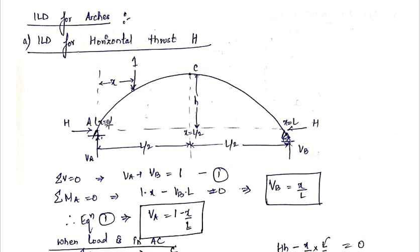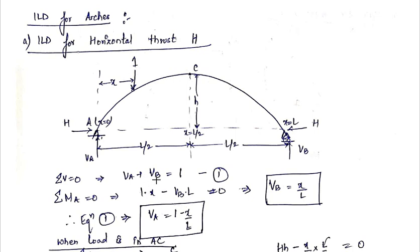We have taken the distance x from support A. Therefore, the value of x will be 0 at support A, L/2 at point C, and capital L at support B. Now, in order to draw the ILD for the horizontal thrust, first we will find out the values of the vertical reactions at A and B by applying all the equilibrium equations. Summation of all vertical forces equal to 0 gives VA plus VB equal to 1.